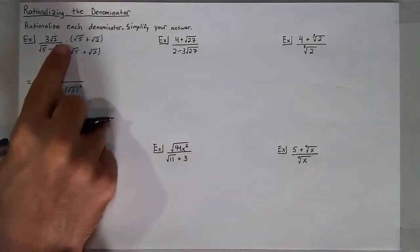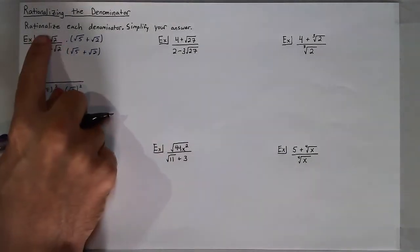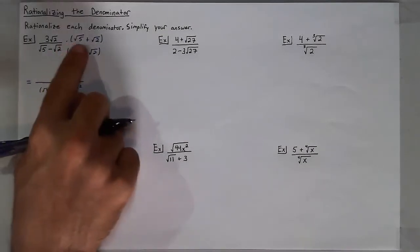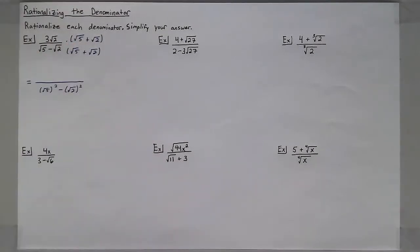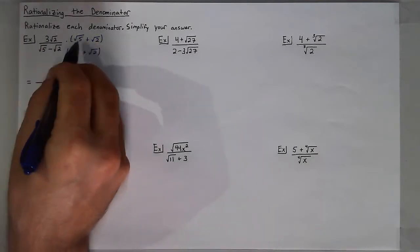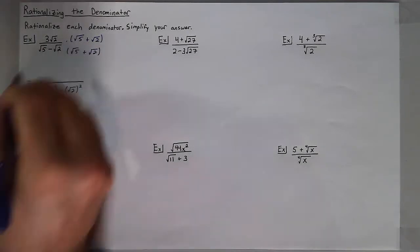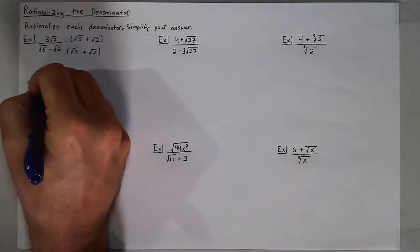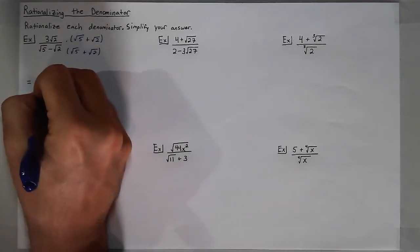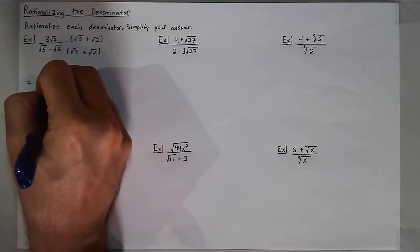In my numerator, I'll just distribute 3 times the square root of 2 into that binomial. So 3 times the square root of 2 times the square root of 5 is 3 times the square root of 10.